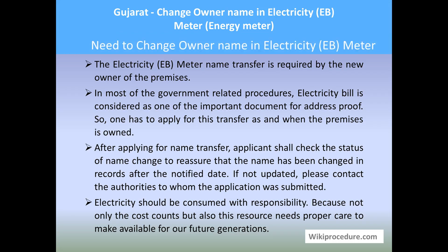Let us find the need to change owner name in electricity meter. The electricity meter or the electricity connection will be in the name of the applicant who applied from the premises of which he is the owner or an occupant. If there is a change of ownership, then it needs to be applied with the respective board for changing the name in the electricity connection, in order to get the bill generated for the consumed electricity units in the name of the owner and the address reflecting on it.